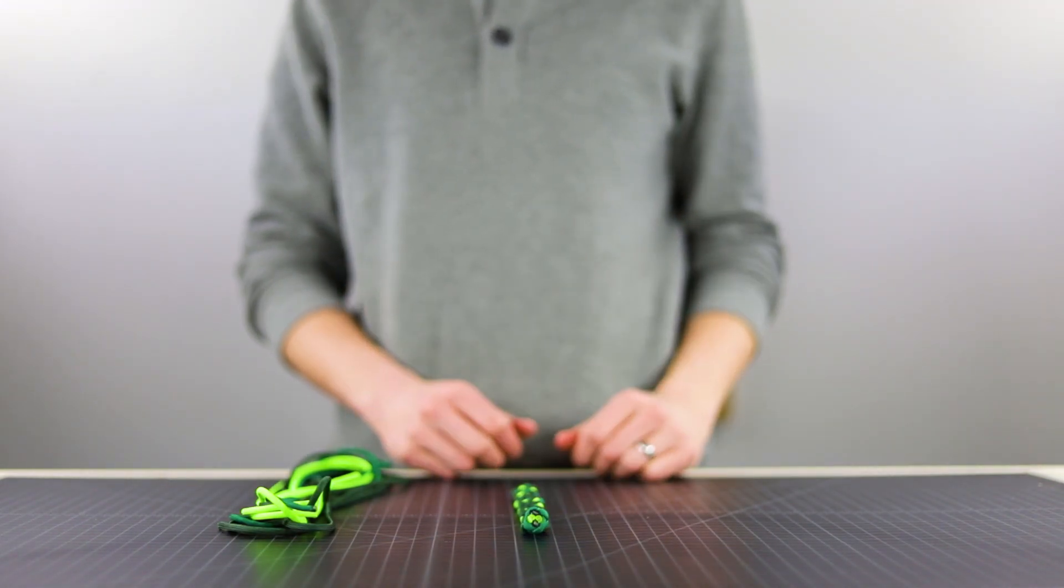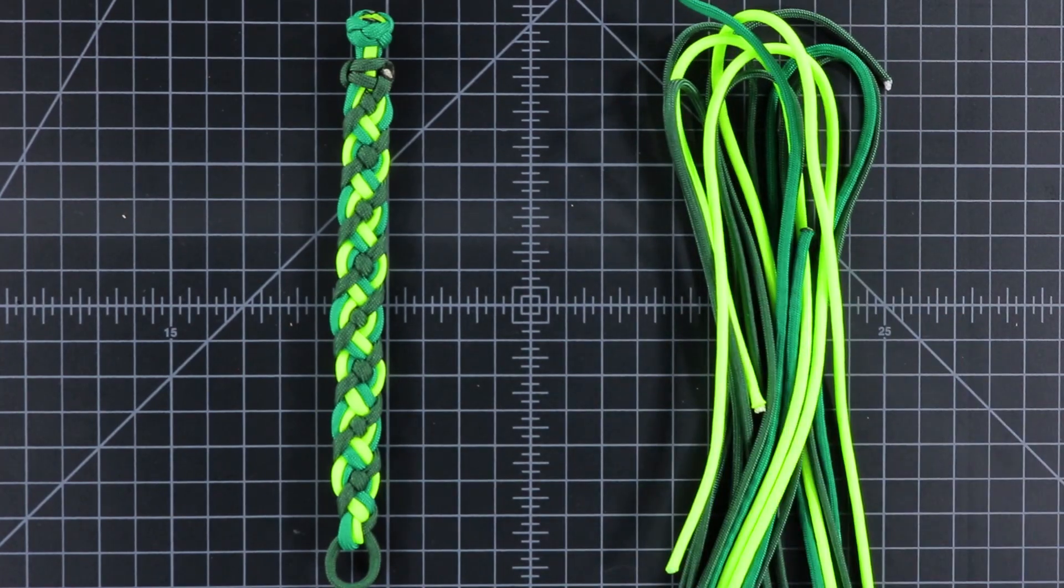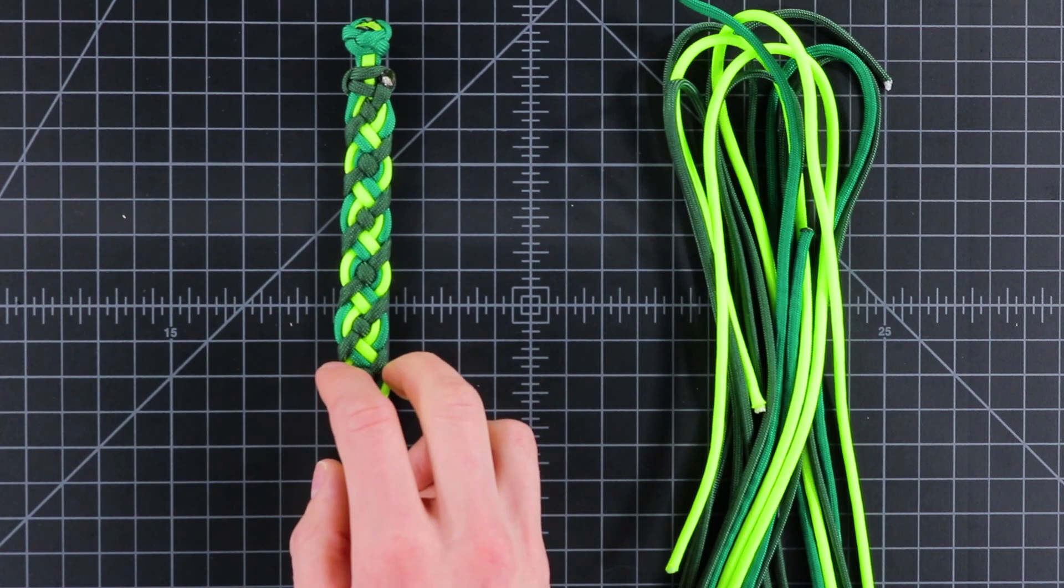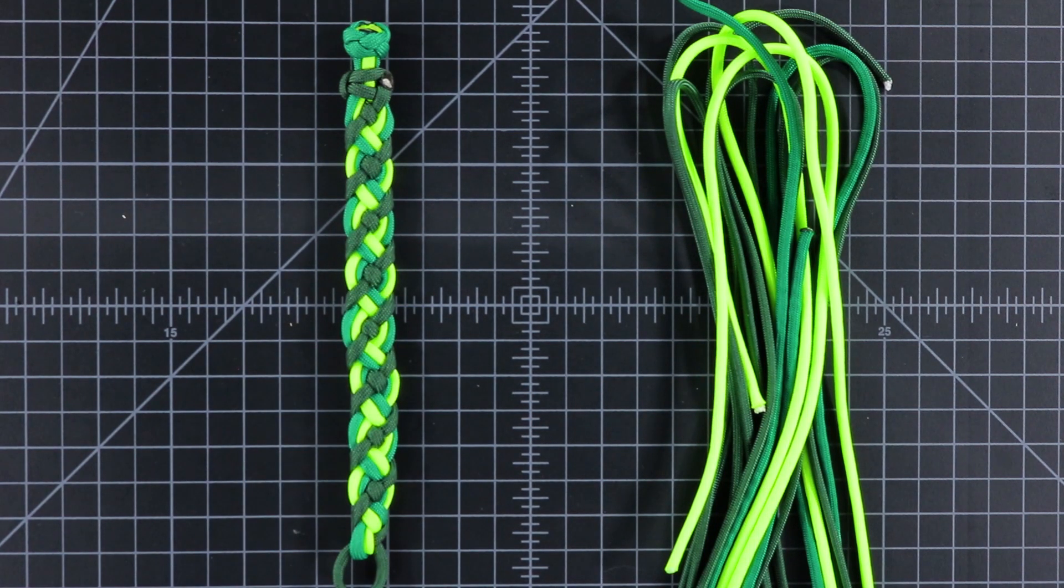Hi guys, welcome back. Today we'll be making a Celtic knot bracelet. I've got a couple of green colors of paracord with me. I've seen this styled in some other colors, themed a little bit different, but I really thought it looked like a Celtic weave, so we're going to be making that today.